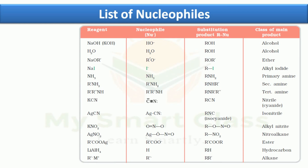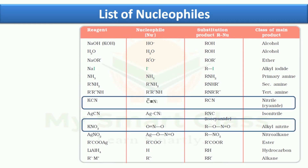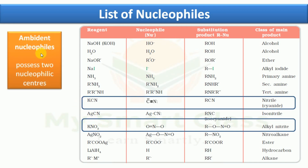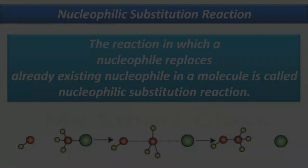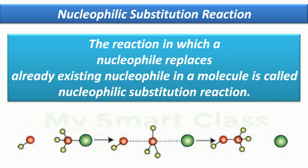Among all nucleophiles, I want to highlight two specific ones: cyanide and nitrite. These two are called ambident nucleophiles, meaning they possess two nucleophilic centers. In the case of cyanide, both carbon and nitrogen are nucleophilic centers. In the case of nitrite, both oxygen and nitrogen are the nucleophilic centers.